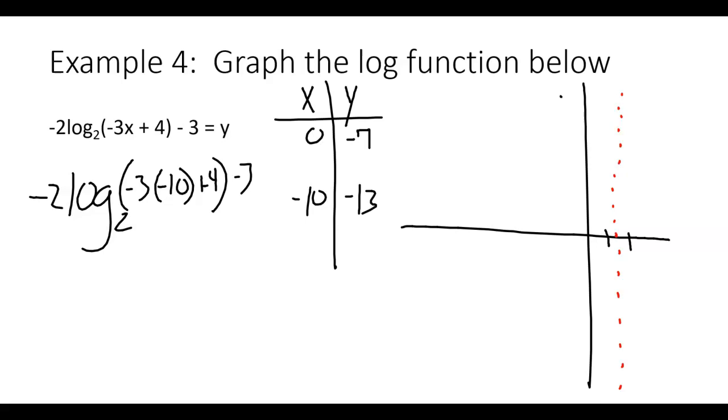So let's go ahead and plot these points. My x-axis needs to go out to negative 10. My y-axis needs to go down to negative 13. So 0, negative 7, maybe right about here. And then negative 10, negative 13 would be way down here. So from there, we can see the direction of our graph is like this. And there's our log function.